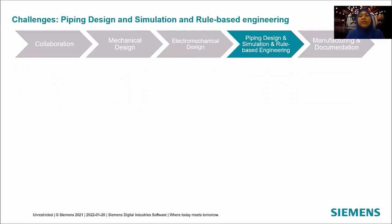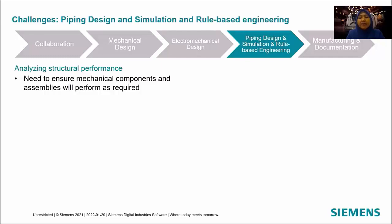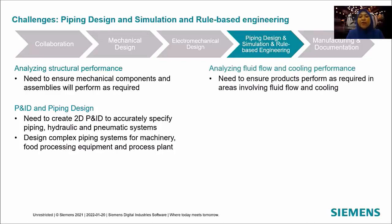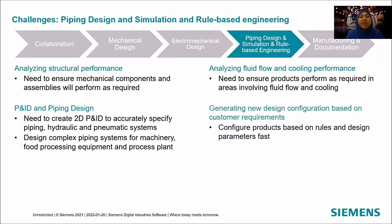Looking at challenges in piping design, simulation, and rule-based engineering: manufacturers need to ensure mechanical components and assemblies will perform accordingly, requiring structural analysis. In P&ID and piping design, they need to create P&ID schematic drawings accurately and create complex piping systems. Analyzing fluid flow and cooling performance is needed, and they also need to generate new design configurations based on customer requirements faster.